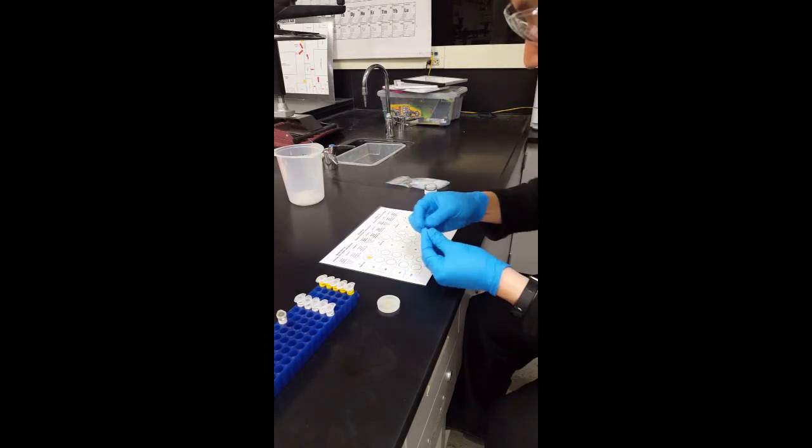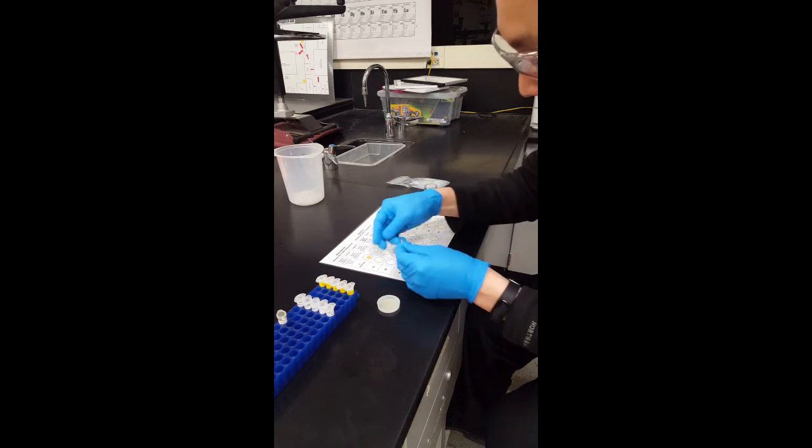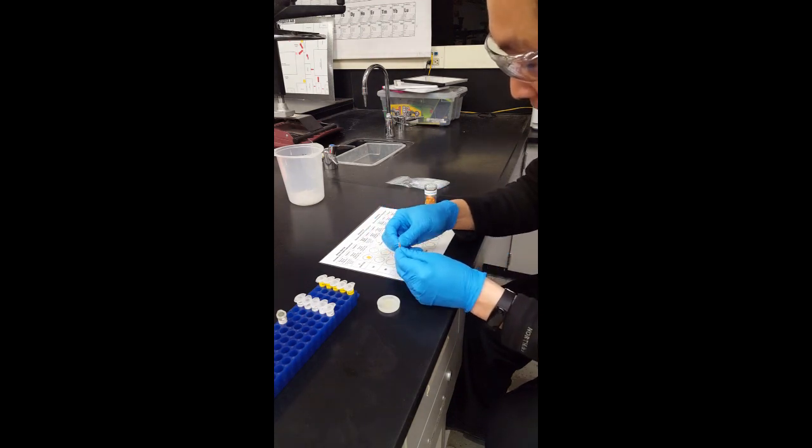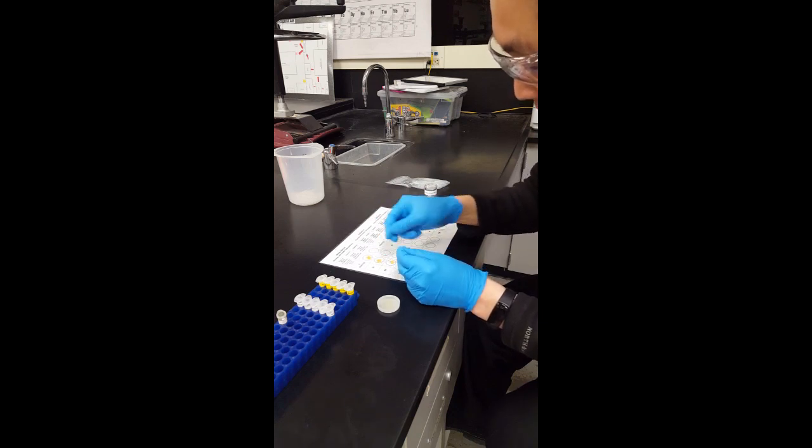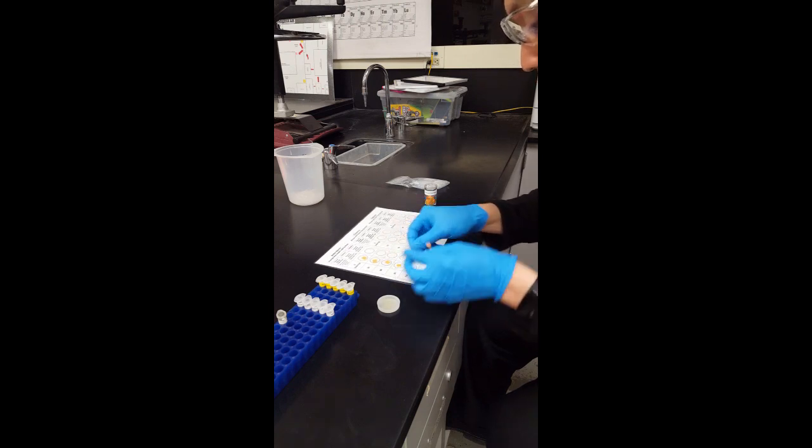So you're going to put this there on column 1 for 0 which is fasting, 30, 60, 90, and 120.